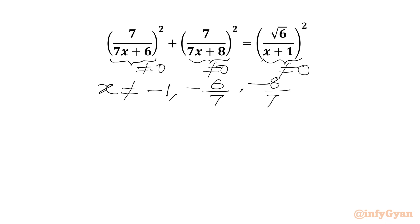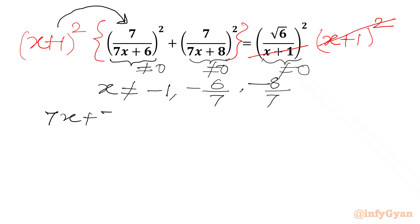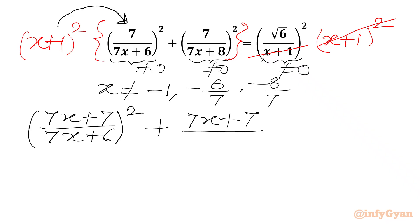Now I will multiply our equation by (x+1)² on both sides, since x cannot be negative 1. We multiply (x+1)² on the LHS also, and cancel the denominator (x+1)² with (x+1)² in the numerator. Using exponent law we get 7x+7 over 7x+6, whole square, plus 7x+7 over 7x+8, whole square, equal to 6.